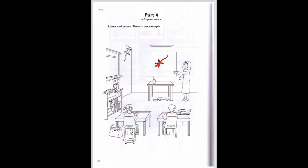Four. Now find the teacher's table. There's a lizard under it — it's drinking some water. Can you colour it purple, please? OK. A purple lizard under the table.